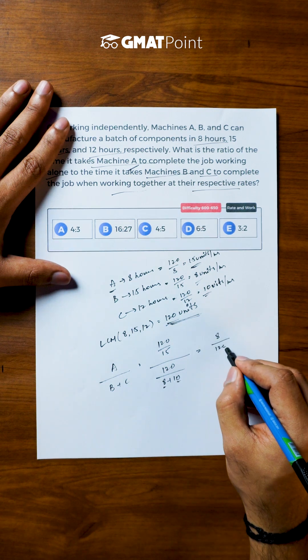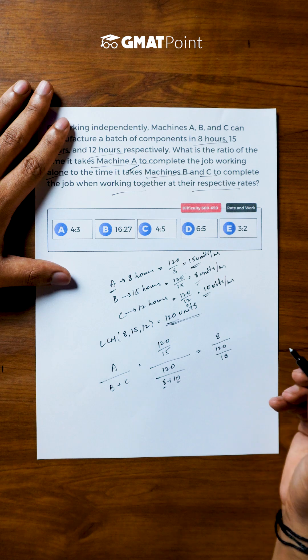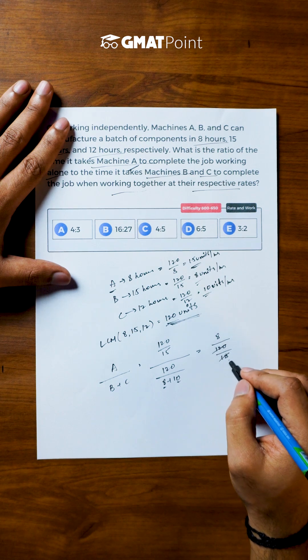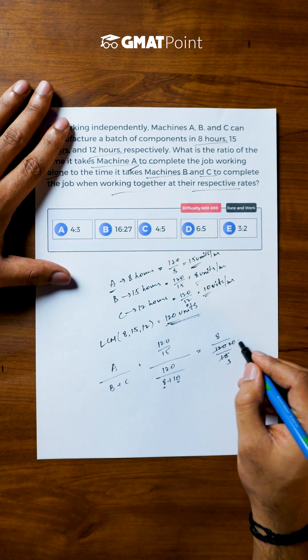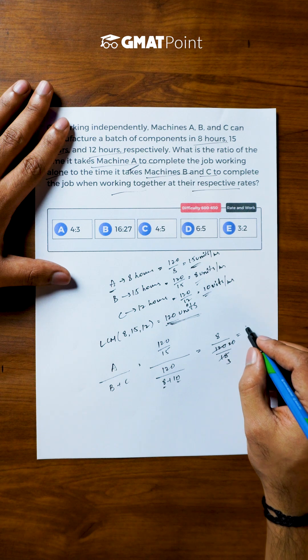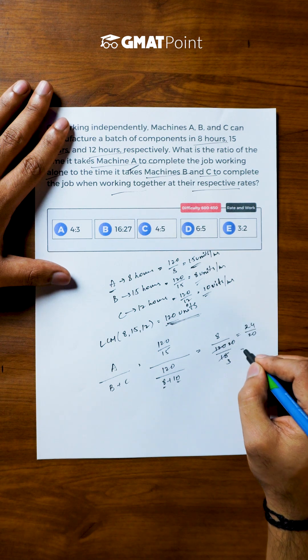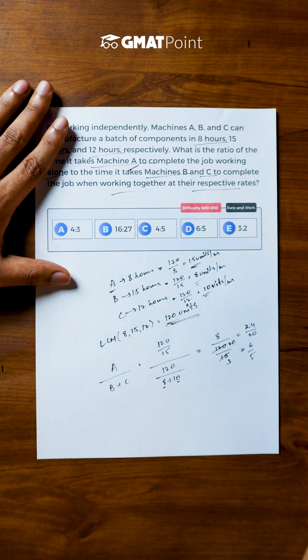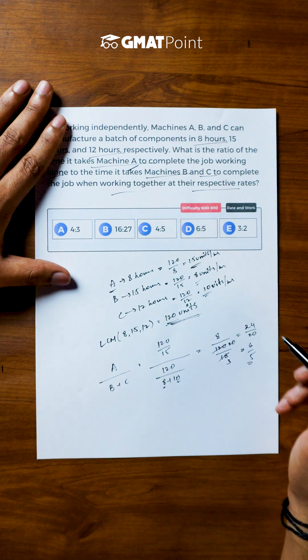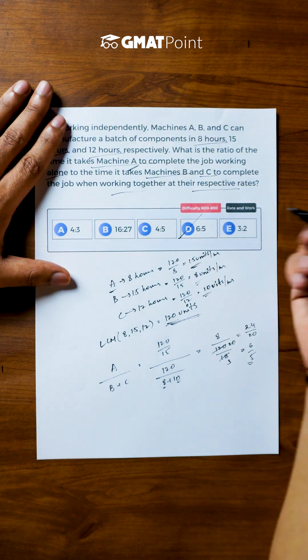So this is nothing but 8 divided by 120 by 18. So the required ratio is 6 to 5 and the correct answer is option D.